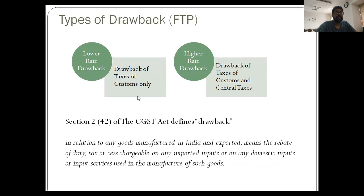The higher rate would include drawback of taxes covering both customs and central taxes. Turning to the CGST Act, Section 2(42) defines drawback: in relation to any goods manufactured in India and exported, it means the rebate of duty or tax chargeable on any imported inputs or domestic inputs or input services used in the manufacture of such goods. Notably, capital goods are not covered.